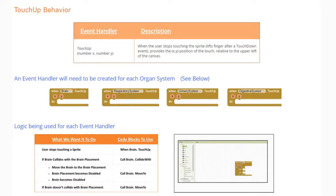Today we're going to continue with Project 1.8 Build-A-Body. Our main focus for today is to look at two different types of event handlers: the touch up and the when dragged. The first one we're going to look at is the touch up behavior.